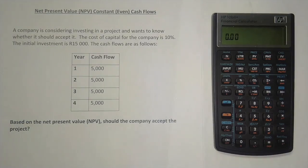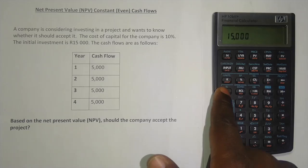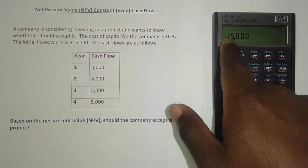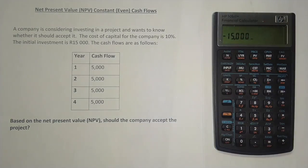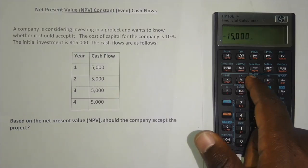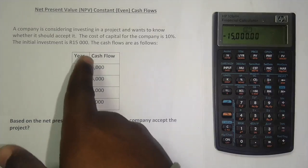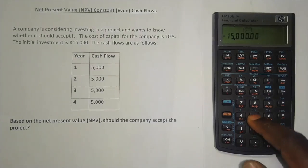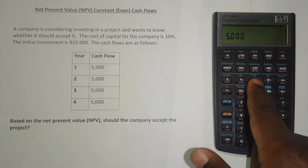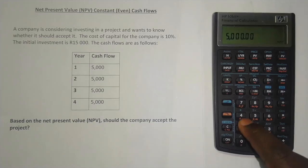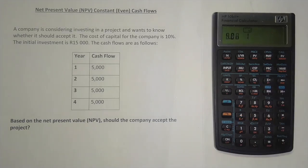The initial investment is 15,000 rand and we enter it as a negative. Press 15,000, then press the plus/minus key — don't press the minus sign, press plus/minus — and the negative sign appears before the 15,000. Then press CFj to record the cash flow at year zero. Next, enter the cash flows: press 5,000, then press Input and enter 4 for the number of years, then press CFj. That puts all your cash flows in, which is why it's very easy when you have constant cash flows.